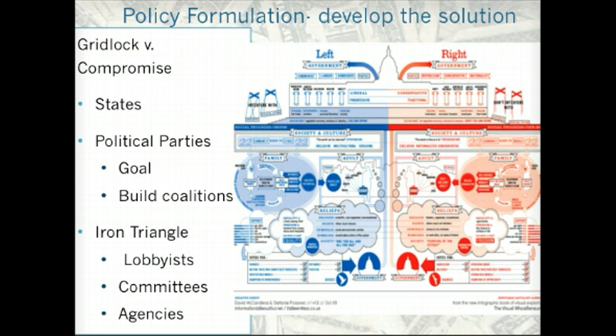Iron Triangles. Remember, an Iron Triangle is the mutually beneficial relationship between lobbyists, congressional committees, and government agencies. Let's take terrorism and the war in Iraq. Lobbyists representing a private company or an industry or an interest group — like Lockheed Martin, Halliburton, General Dynamics, GM — they all have something to gain from war. They can all sell the government products that will help fight wars. Congress members who sit on the committee will receive information and campaign contributions from these industries.